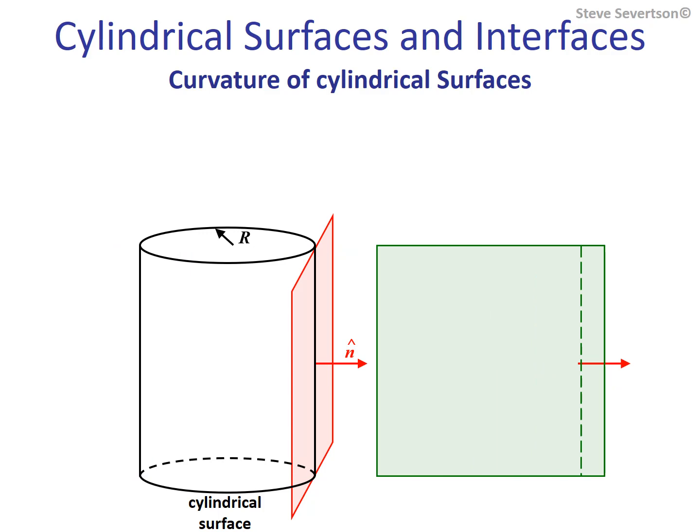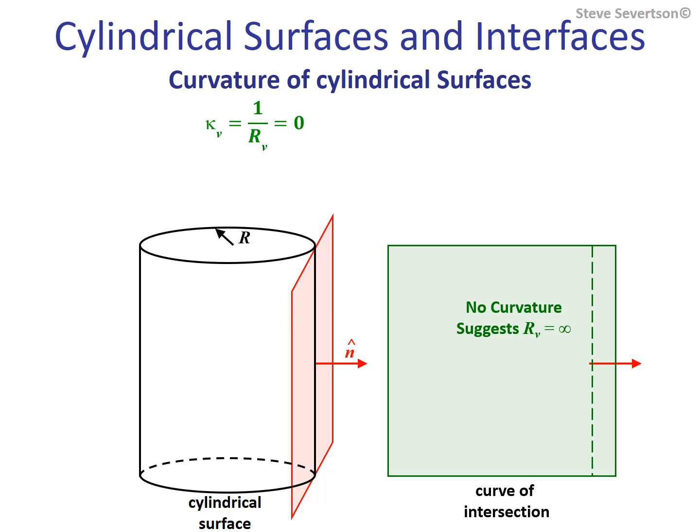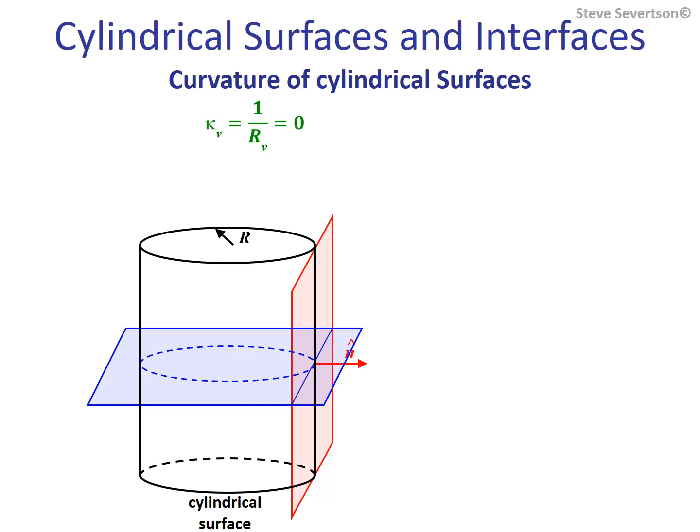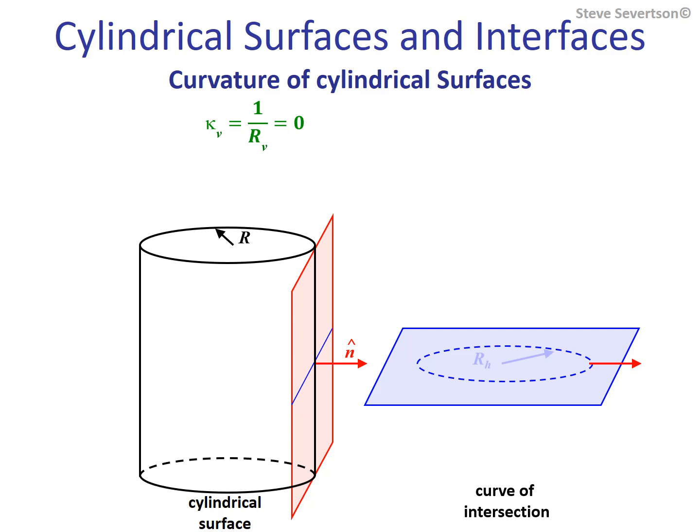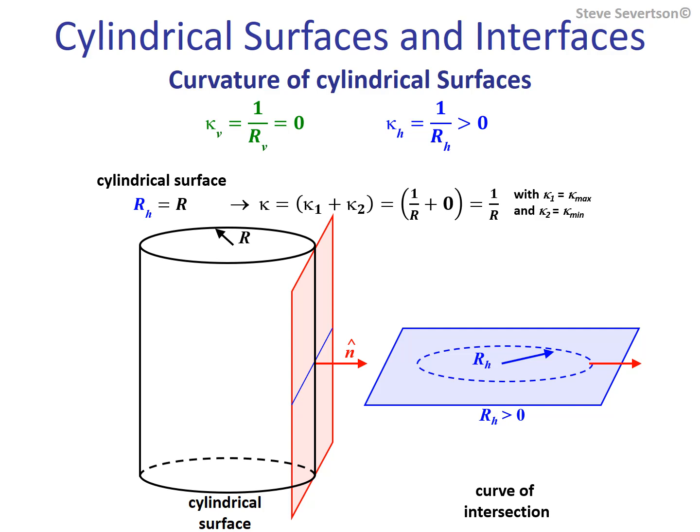A vertical plane is passed through the normal parallel to the cylinder axis to produce a curve of intersection. The curve in this case is a straight line, which is only fit by a circle of infinite radius, resulting in a curvature of zero for the vertical plane. The horizontal plane, rotated 90 degrees from the vertical plane, is passed through the unit normal perpendicular to the cylinder axis, producing a circular curve of intersection with a radius equal to that of the cylinder. Thus, the total curvature is equal to 1 over R plus zero, or simply 1 over R.